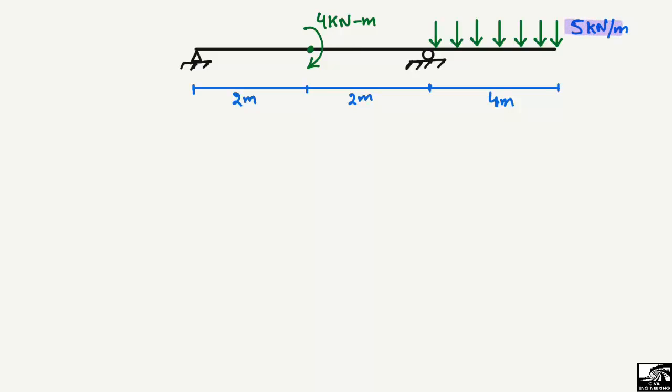There is a uniformly distributed load of 5 kN/m acting on the right portion of the beam, which is 4 meters in length. There is also an applied moment of 4 kN·m at the center of the beam — 2 meters from the left end and 2 meters from the right end.